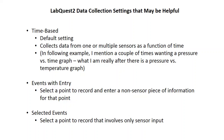Another mode we might use is events with entry. You've seen that in the visible spectra lab and in the conductivity lab. In events with entry, you're measuring things using sensors, but there's one piece of information you have to put in by hand — for example, the number of plastic strips, the concentration of food coloring, or the volume in the burette. In this experiment, you'll very often be putting in the volume of a gas sample.